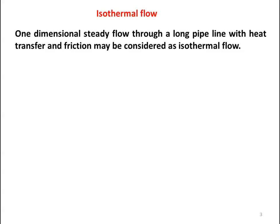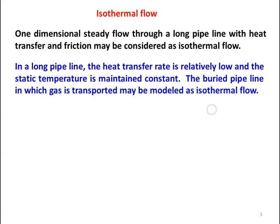In isothermal flow, we consider both heat transfer and friction, but during the process the temperature is constant. To keep the temperature constant, the process takes place in a long pipe. In a long pipeline, the heat transfer rate is relatively low and the static temperature is maintained constant. A buried pipeline in which gas is transported may be modeled as isothermal flow, where we assume the temperature is kept constant — if the temperature of the gas or liquid fuel increases, it will cause problems.